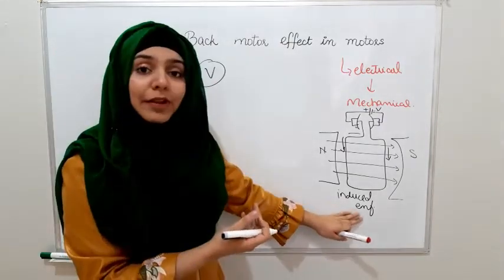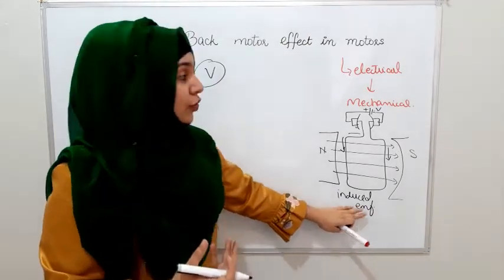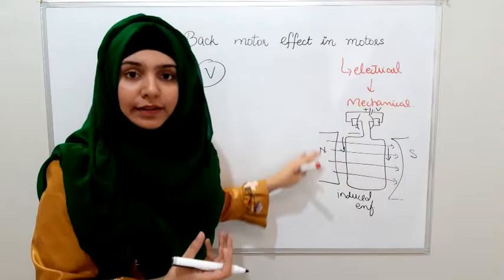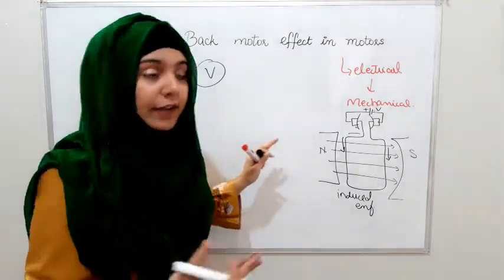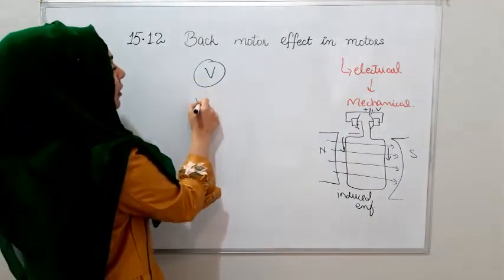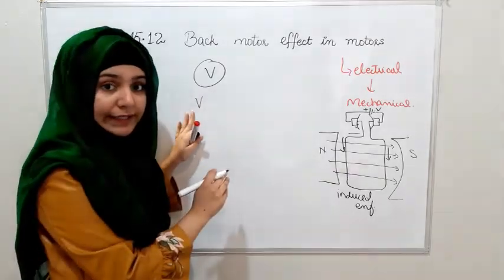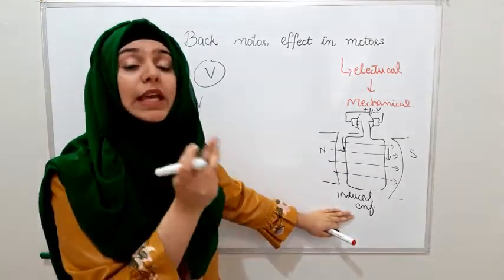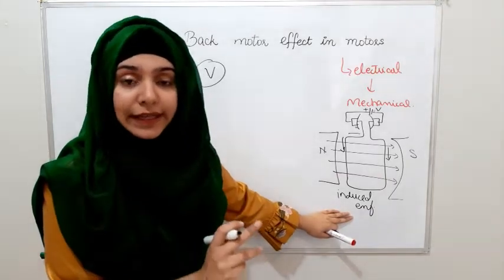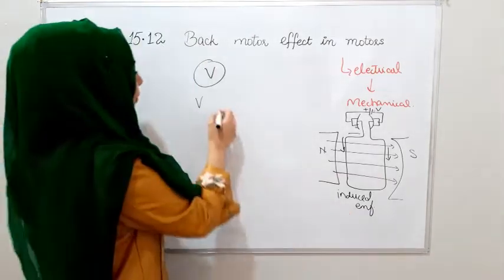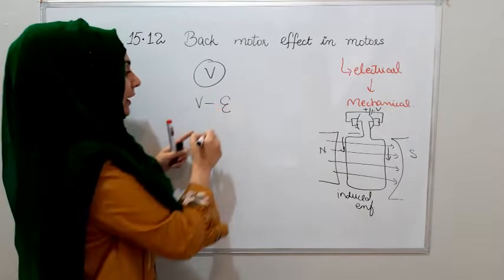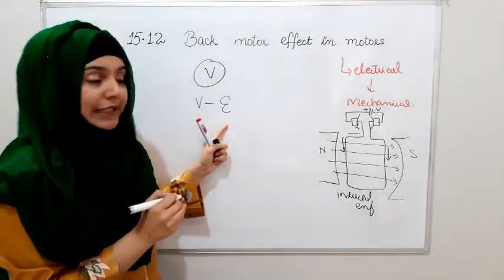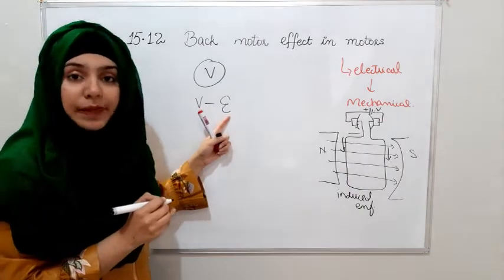The induced EMF's polarity is in the opposite direction to the supply. It is opposite to the battery's EMF throughout the circuit, so there exists a net EMF. We are providing the external EMF, and internally the induced EMF is produced. The induced EMF is opposite — it has a negative sign. So this is the back EMF effect.